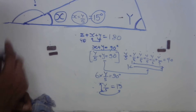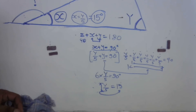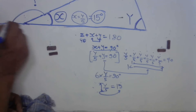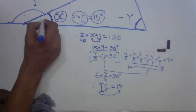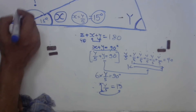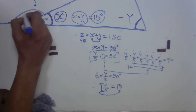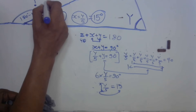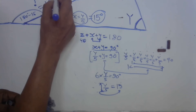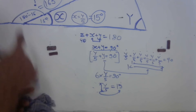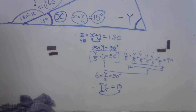Now, x is 15 degrees. What about this angle along the straight line? If we take 15 degrees away from a straight line of 180 degrees, we get 180 minus 15, which equals 165 degrees. So the exterior angle shown is 165 degrees.